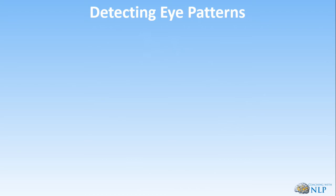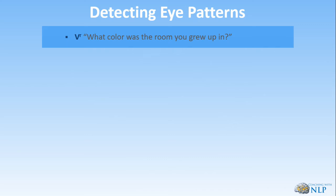On page 71 we've got some questions you can ask to see whether the client is normally or reversed organized. To find out their visual recall, I could ask: 'What was the color of the room you grew up in?' or 'What was the color of the first car that you owned?' The aim of these questions is to force the client to go inside and search for the information. Use a question that has the same intent — forcing the client to go inside and access the information.